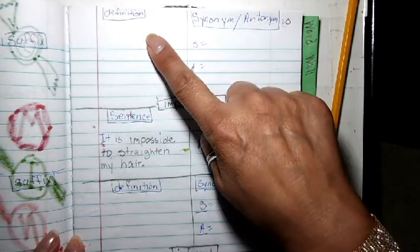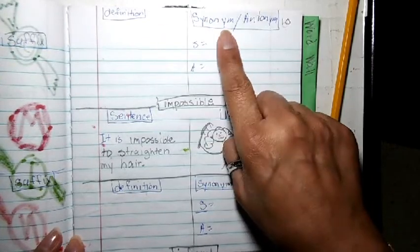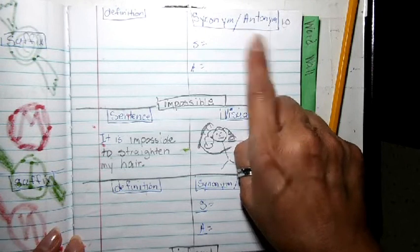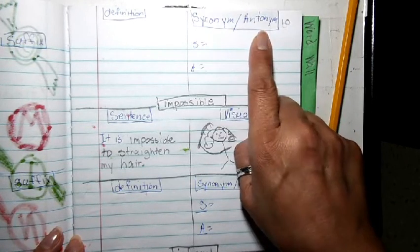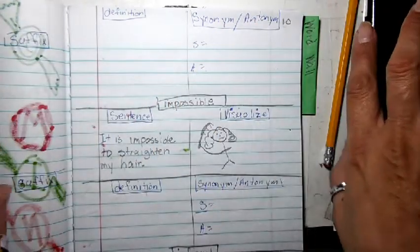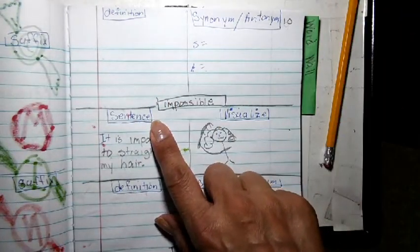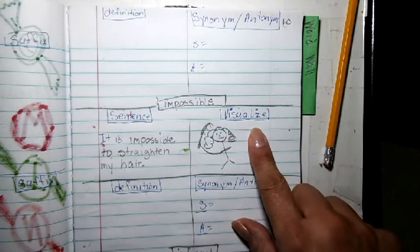I'm going to put the definition, synonym, antonym. What's a synonym? It means the same. What is an antonym? It means the opposite. Then I'm going to make a sentence with my word and I'm going to visualize it.